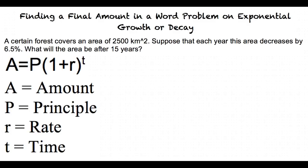t is the time, usually in years. To begin this problem, we should list out everything we know. Since we know the forest currently covers an area of 2,500 km², we know that our P, or starting amount, is 2,500.